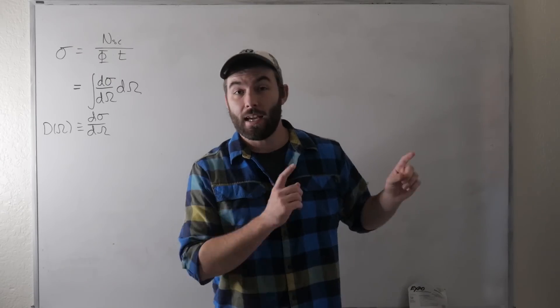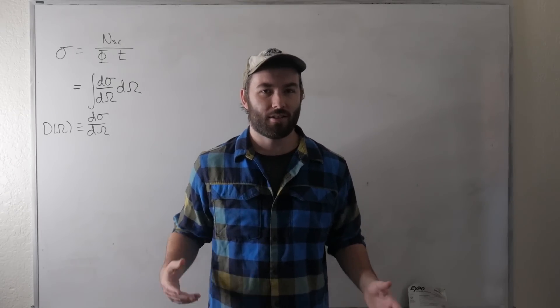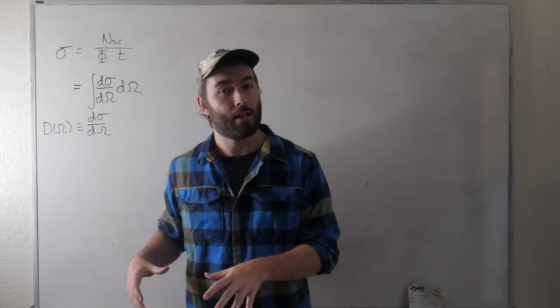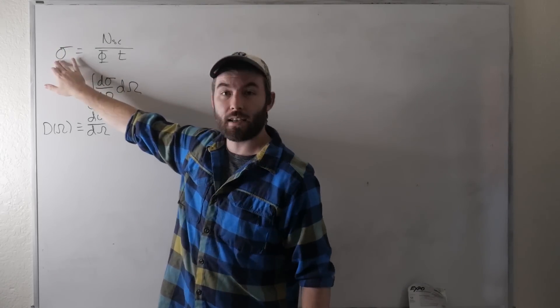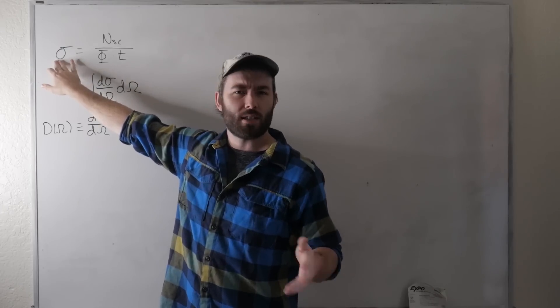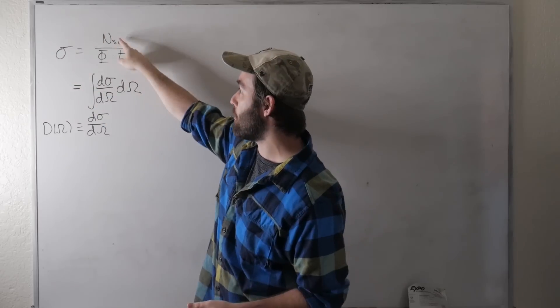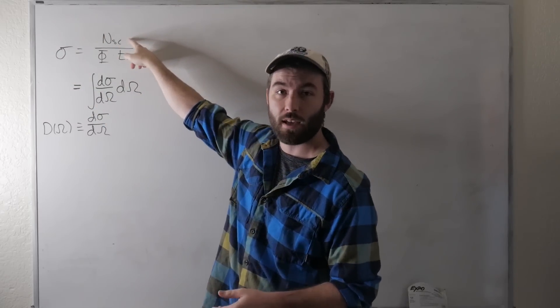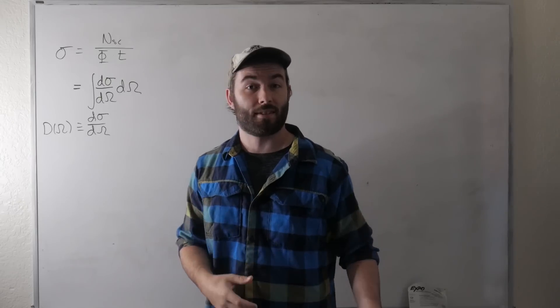What's going on smart people? In the last cross section video we did a lot of the conceptual heavy lifting that allowed us to see how under very limited circumstances we can relate things like the size of the object, the cross sectional area, our target, to experimentally measurable or controllable quantities such as the number of scattering events in the experiment and properties of the beam such as its flux, its number density of particles, things like that.